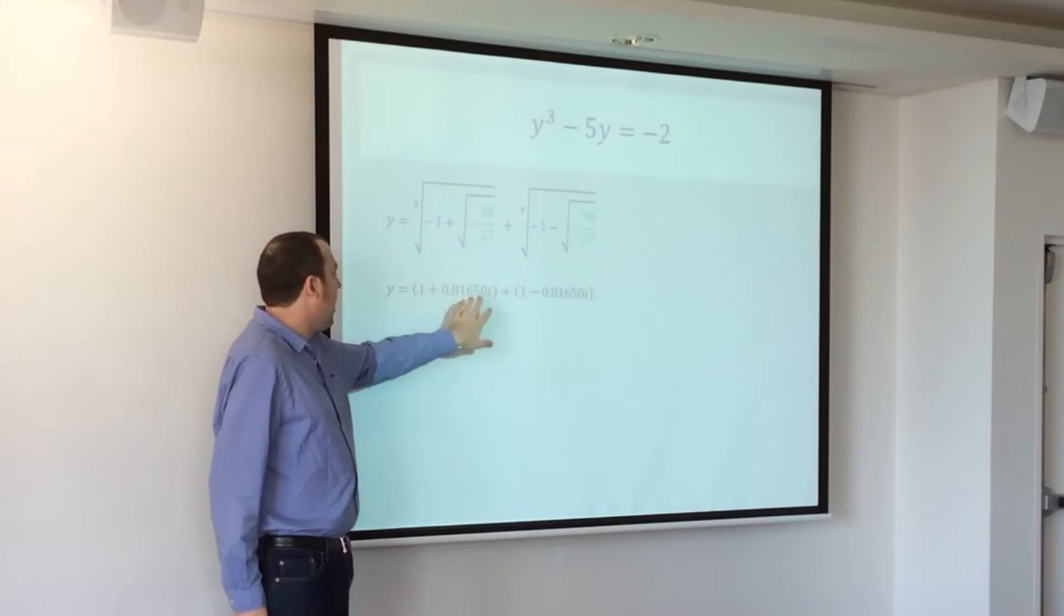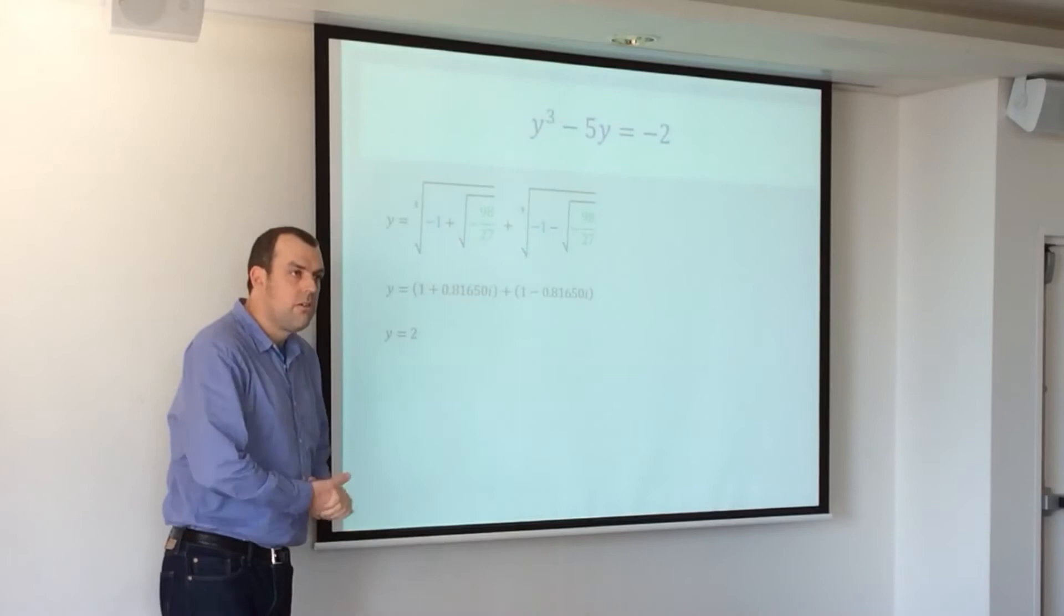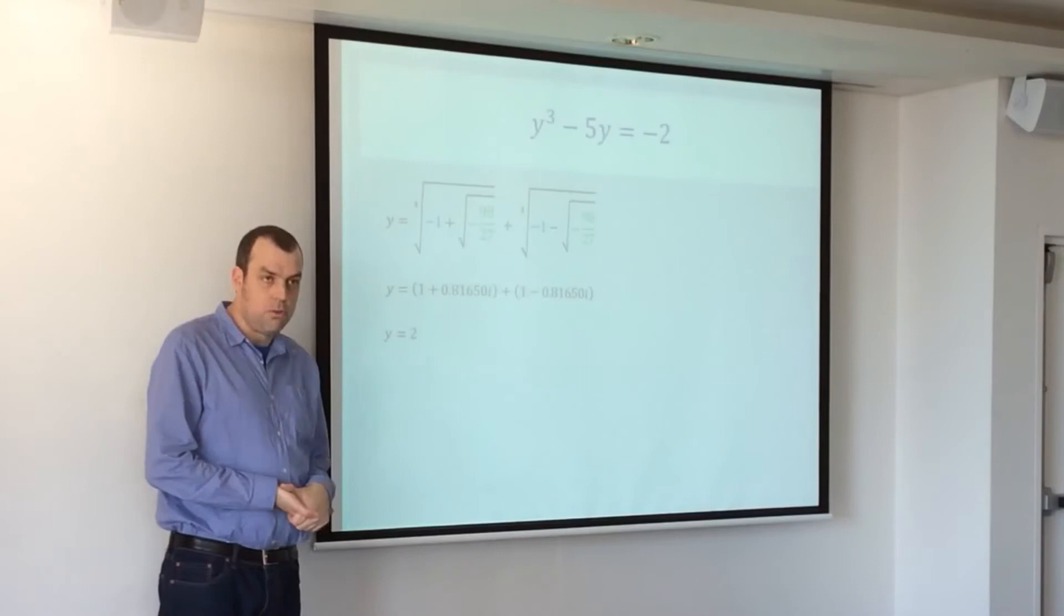It's complex, you know, to five significant figures. So one plus that i plus one minus that i gives us two. Okay? So the solution, I should say a solution, is y equals two.